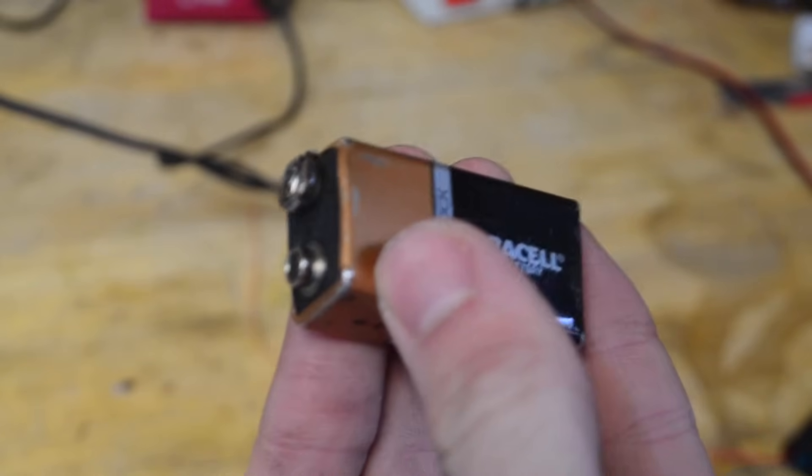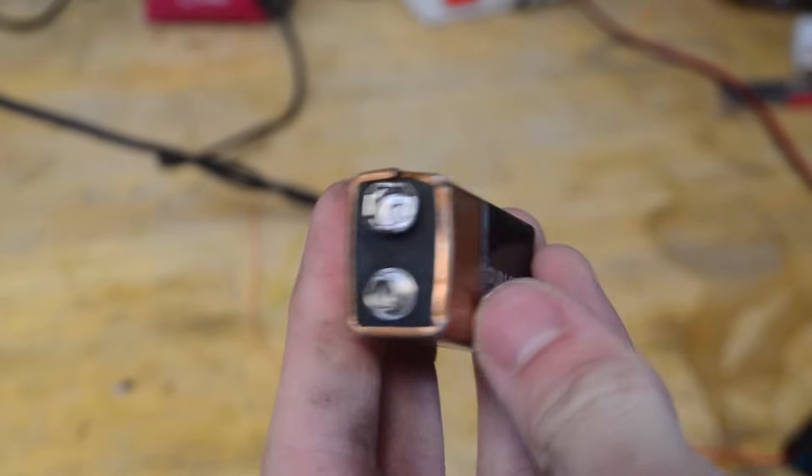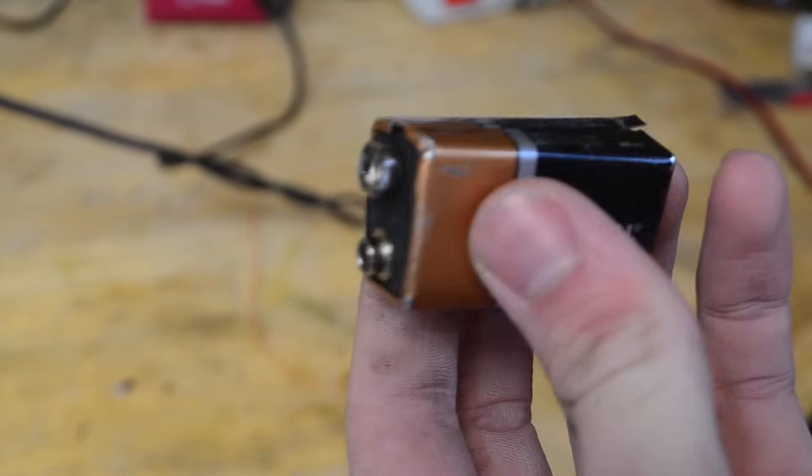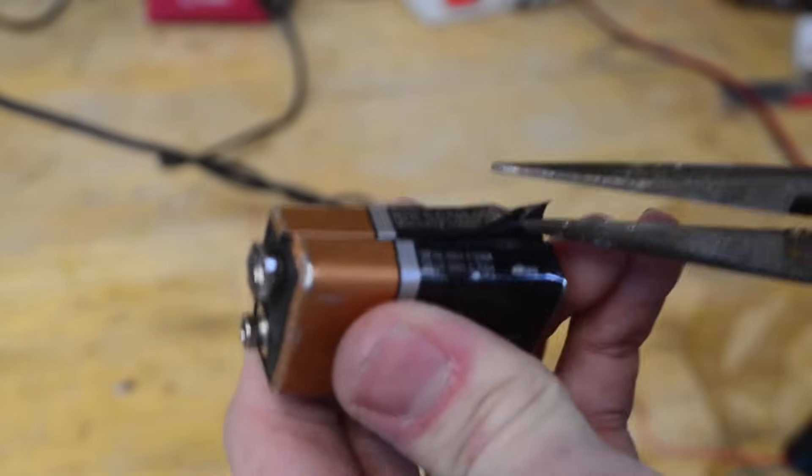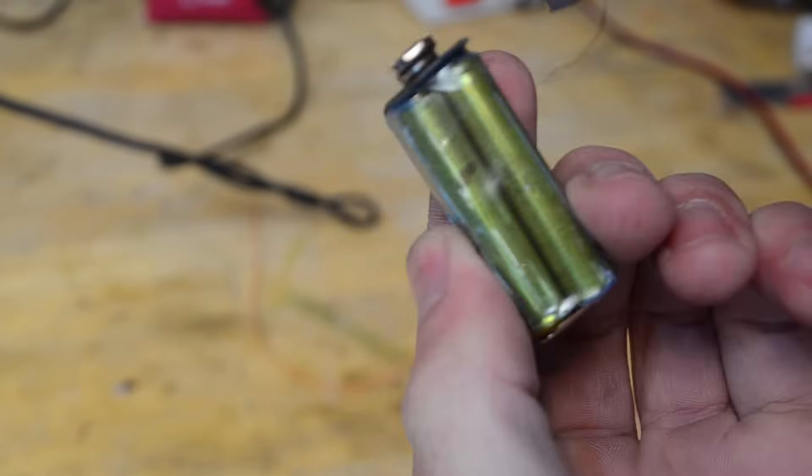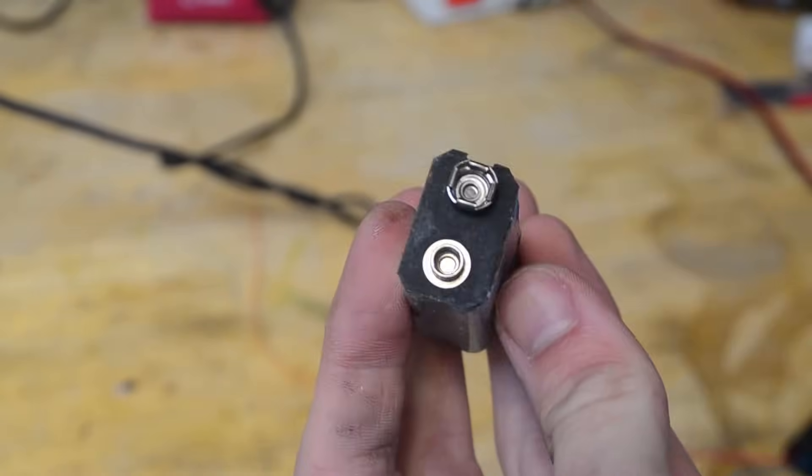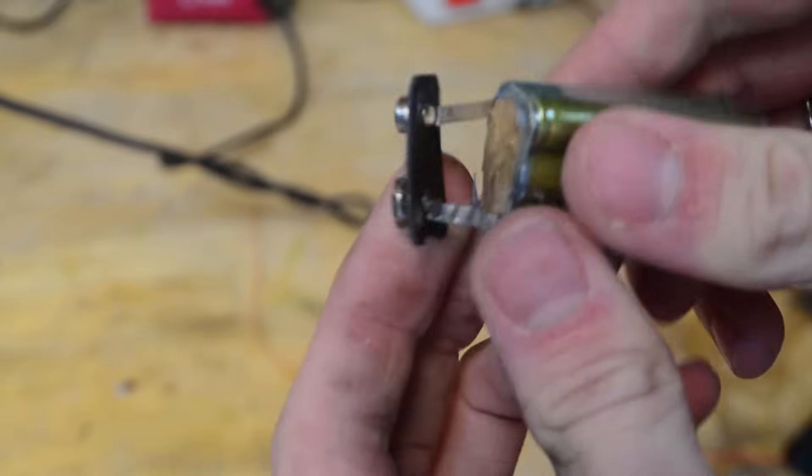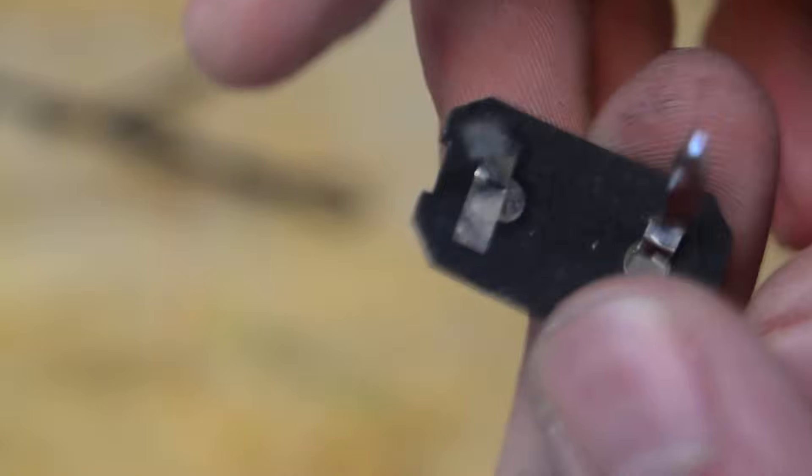For the 9-volt battery terminal, you can order one for really cheap or make one with an old dead battery like this. I'm going to pry away the metal casing. Inside you can see all the AAA battery equivalents that add up in series to 9 volts. Now I'll pull this terminal and snip these wires. Just like that, we have our 9-volt battery terminal.